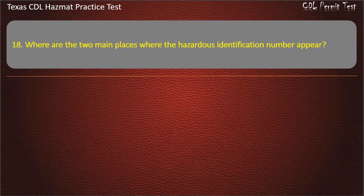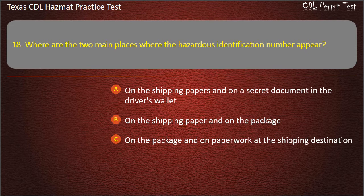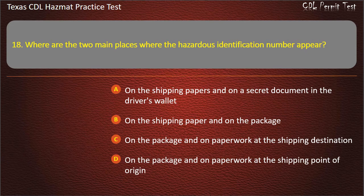Question 18: Where are the two main places where the hazardous identification number appears? On the shipping papers and on a secret document in the driver's wallet. On the shipping paper and on the package. On the package and on paperwork at the shipping destination. On the package and on paperwork at the shipping point of origin. Answer: On the shipping paper and on the package.